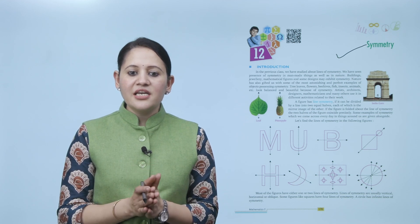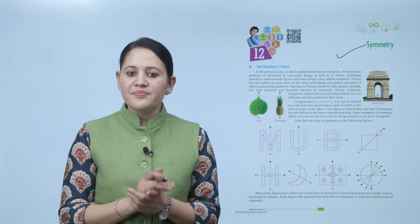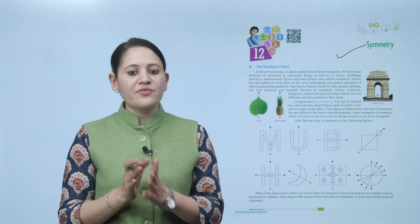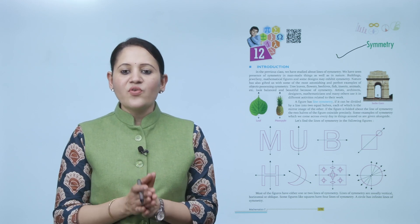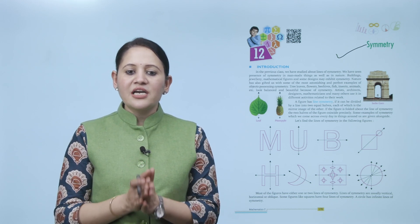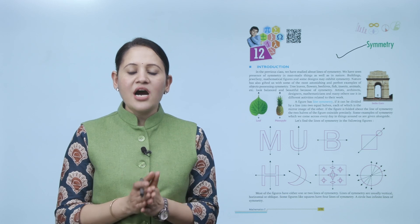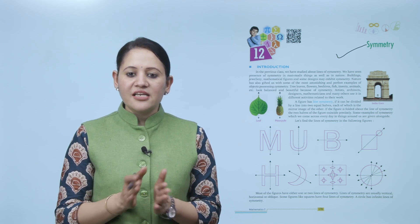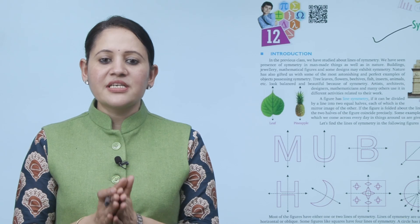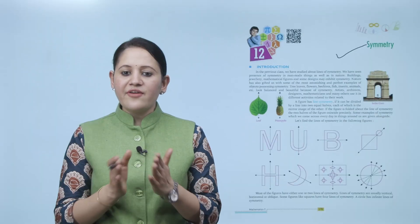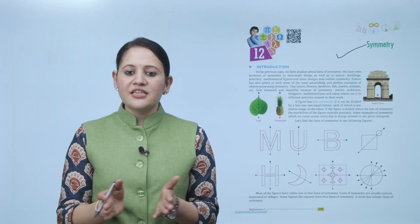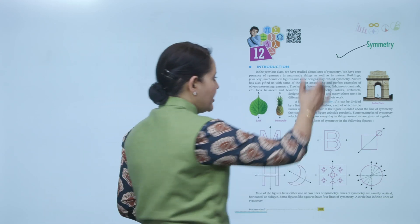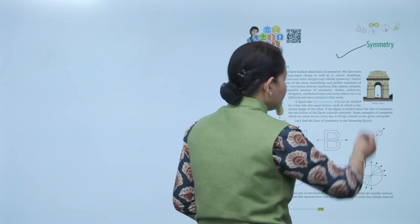A figure has a line of symmetry if it can be divided by a line into two equal halves, each of which is the mirror image of the other. When the figure is folded about the line of symmetry, the two halves of the figure coincide precisely. Some examples of symmetry which we come across every day are given alongside, like this monument from India.